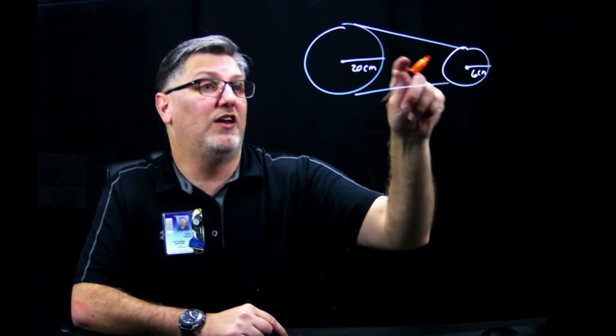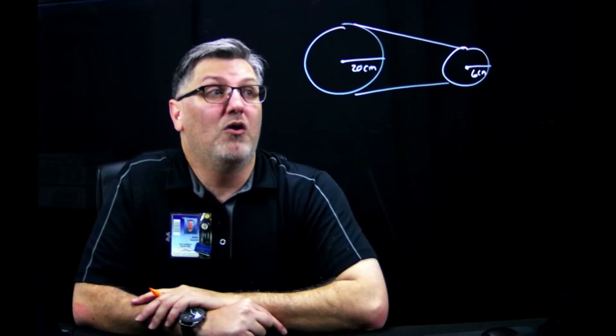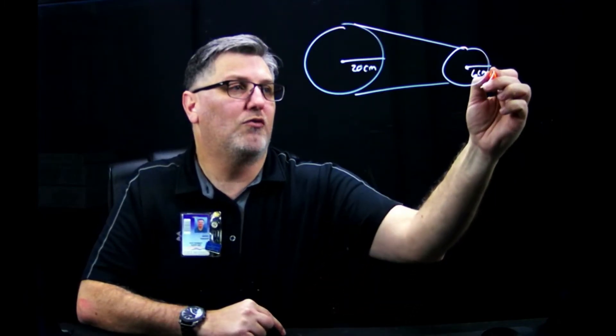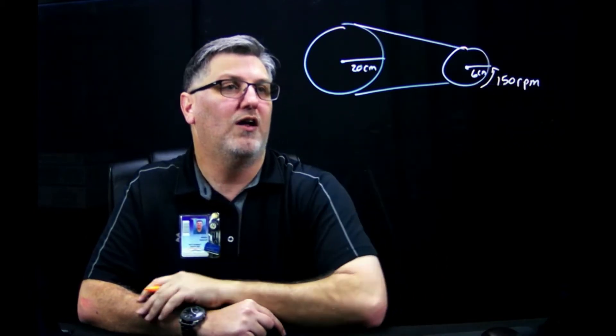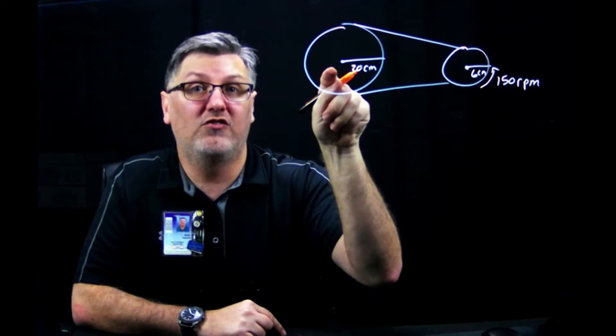You may even see it where this has teeth and this has teeth, and they interconnect as one spins and it makes the other one spin. Now, with this, let's say that this is revolving at 150 revolutions per minute. I want to know the angular velocity of this circle.